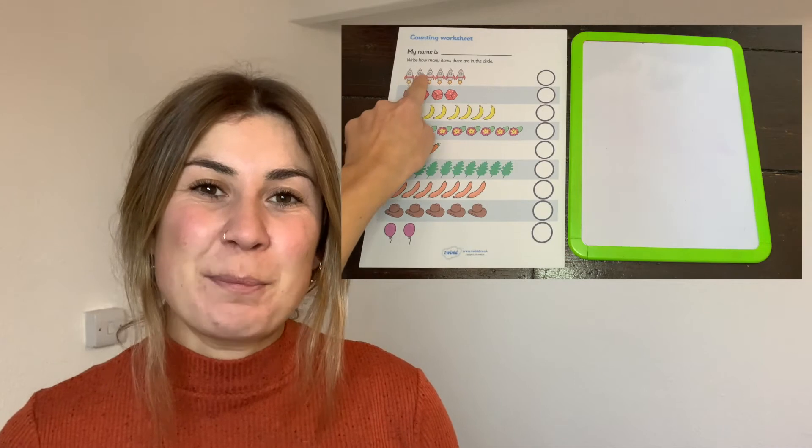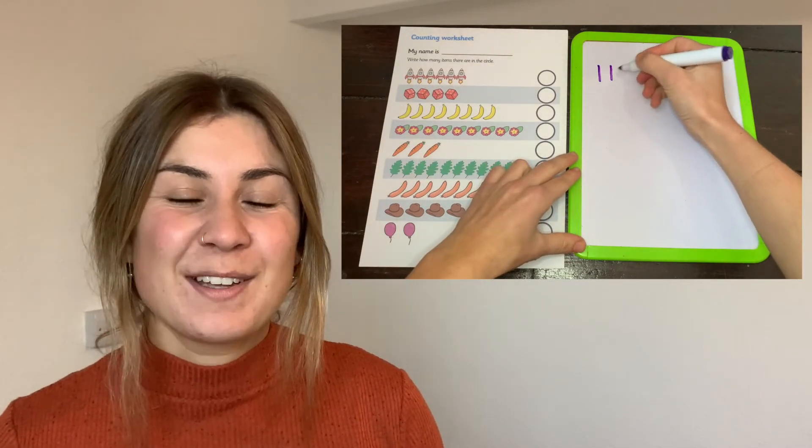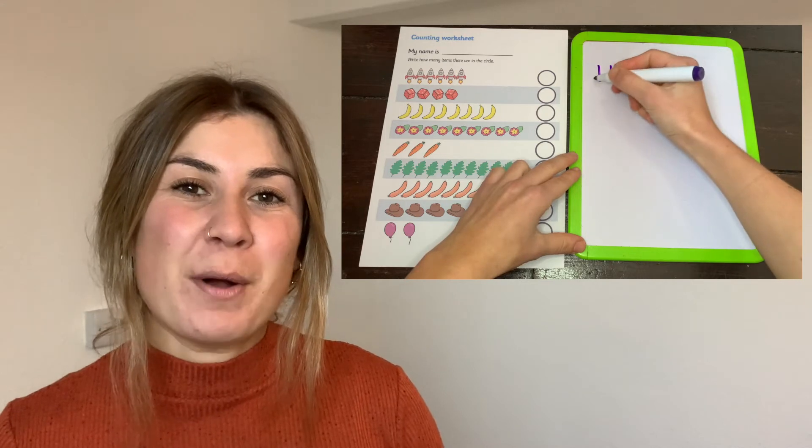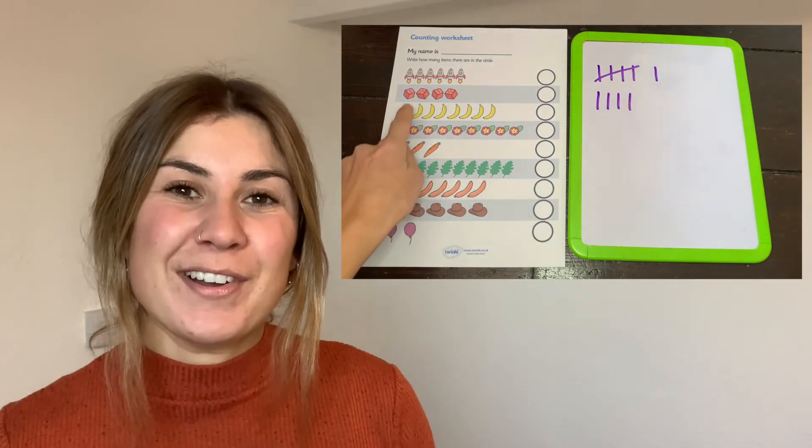Another skill that your children could practice whilst completing the worksheet is creating a tally. Once they've counted each group of objects, can they create a tally of how many of each object there was?